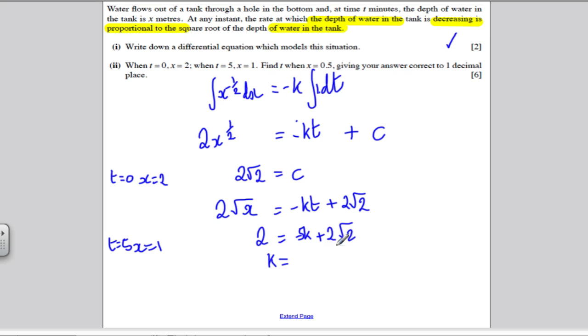So rearranging for k, then k would be, if we rearrange this, k would be equal to 2 root 2 subtract 2 and a fifth of all that. So that would be equal to k. So therefore, our general solution to this is 2 square root x is equal to k, which is minus a fifth times 2 root 2 minus 2 times t plus 2 root 2. That is our particular solution.